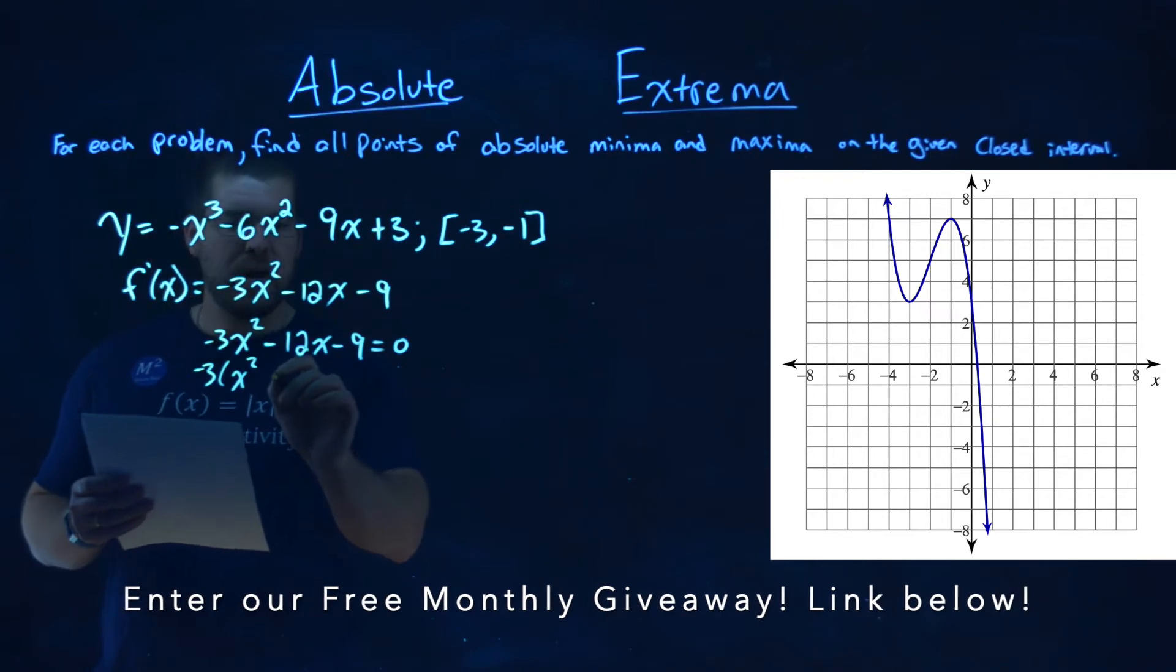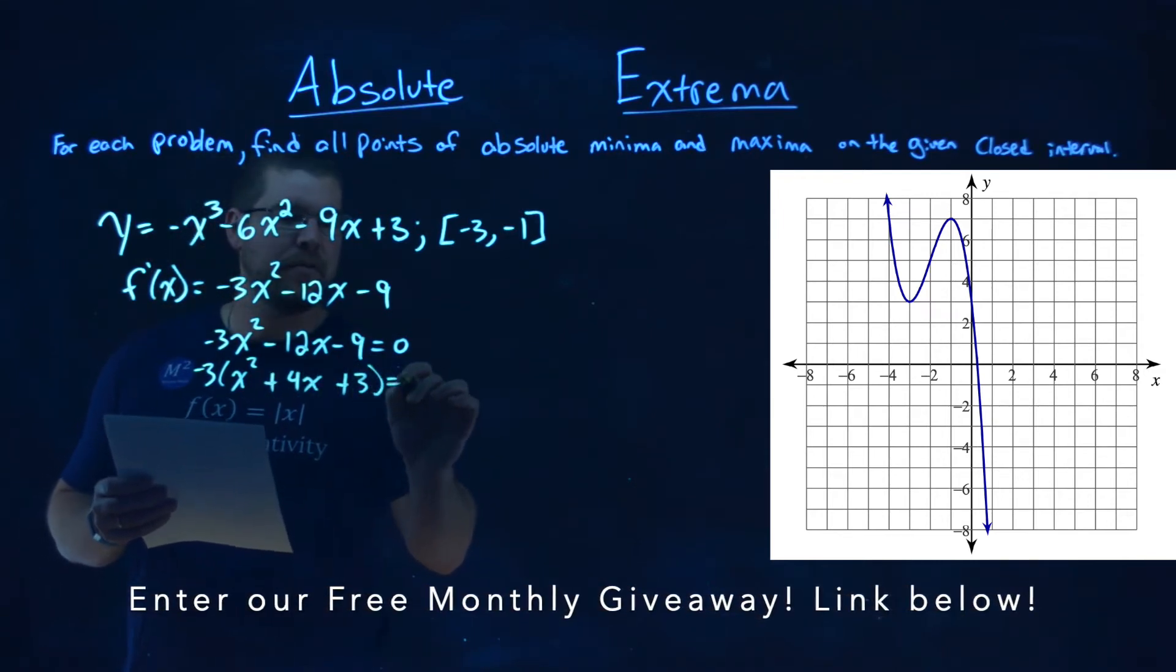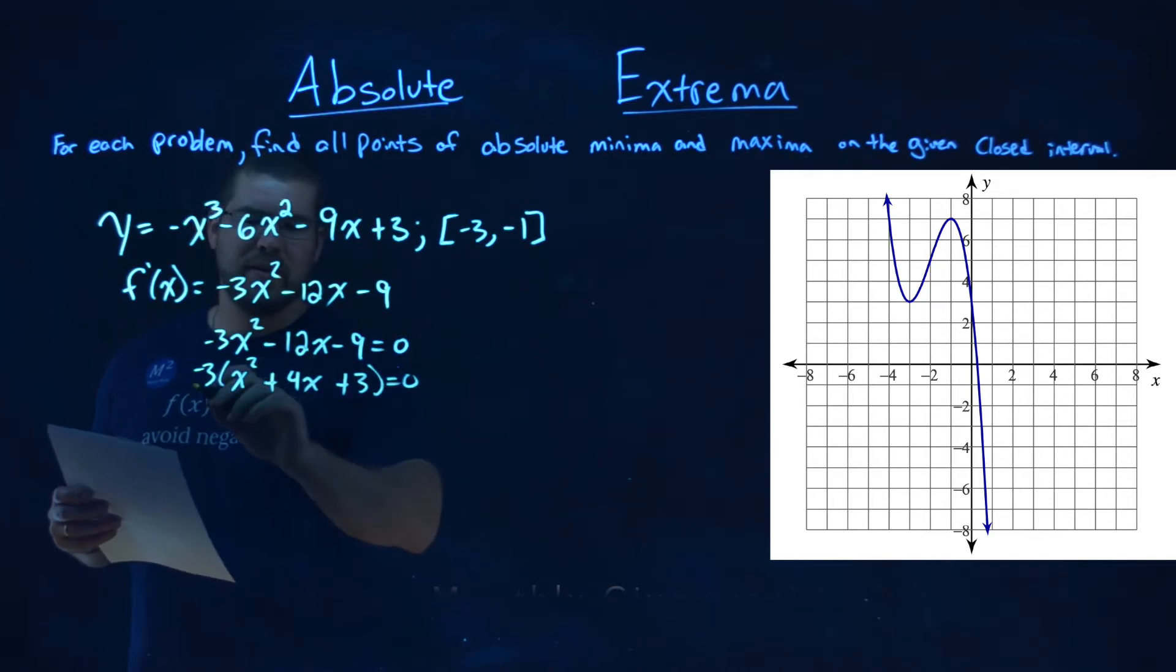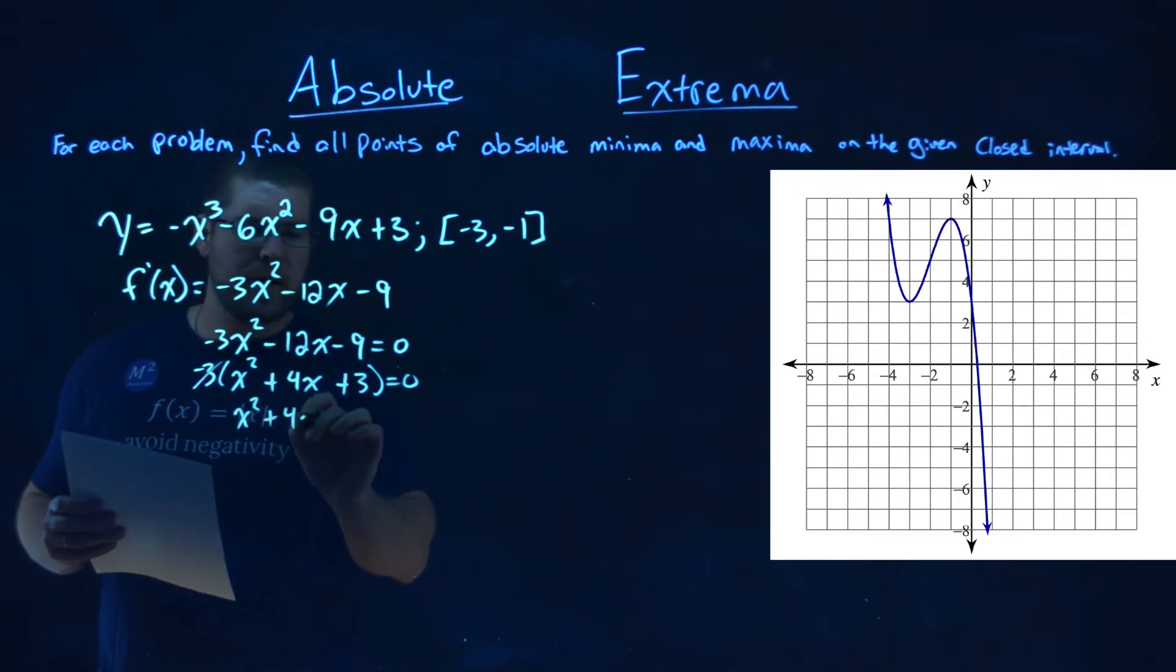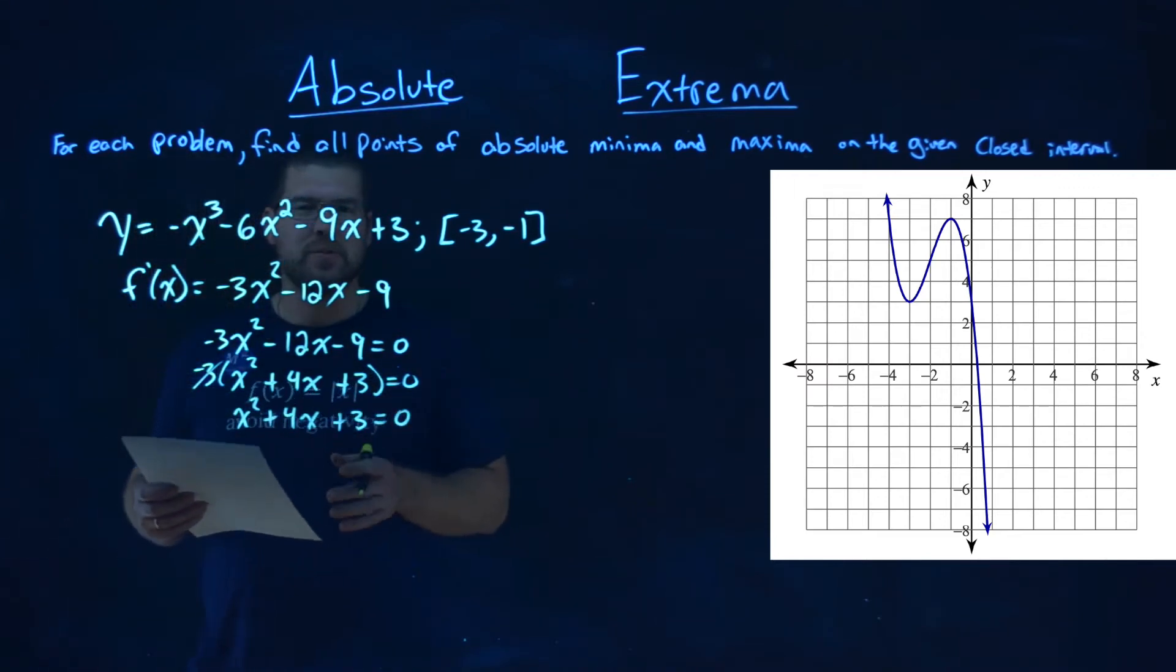we have x squared, then plus 4x, and then plus 3 equals 0. Divide both sides by negative 3, and we can just eliminate that. So we have x squared plus 4x plus 3 equals 0, and now we need to factor.